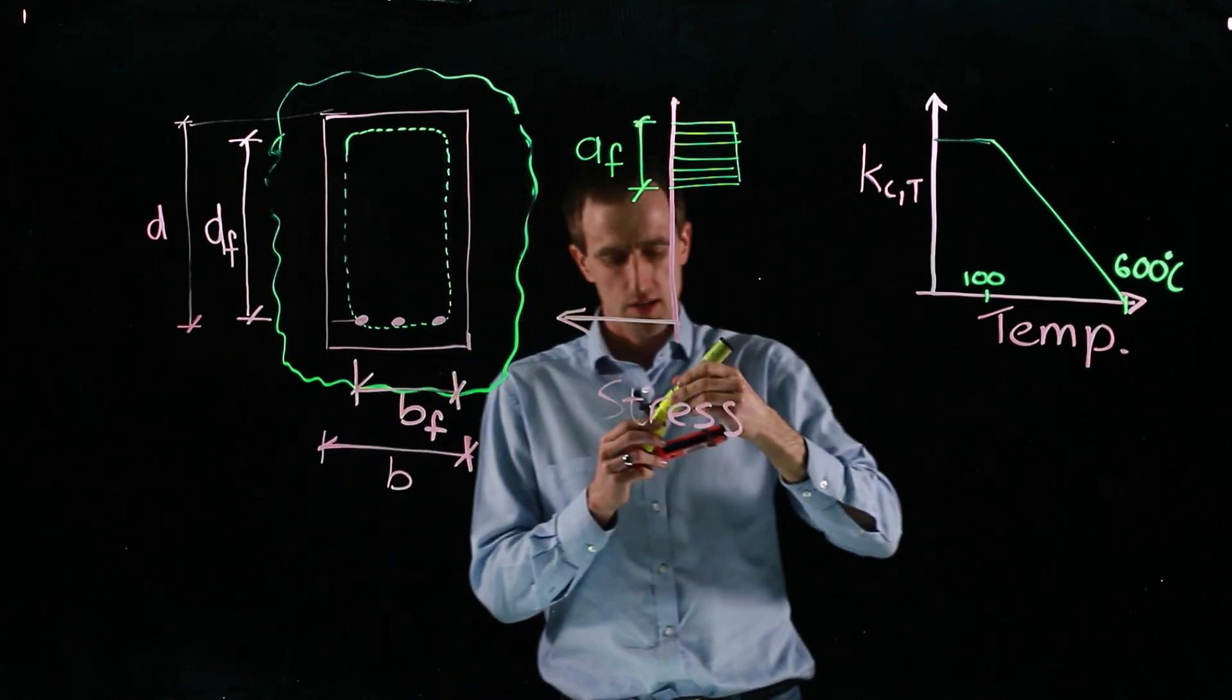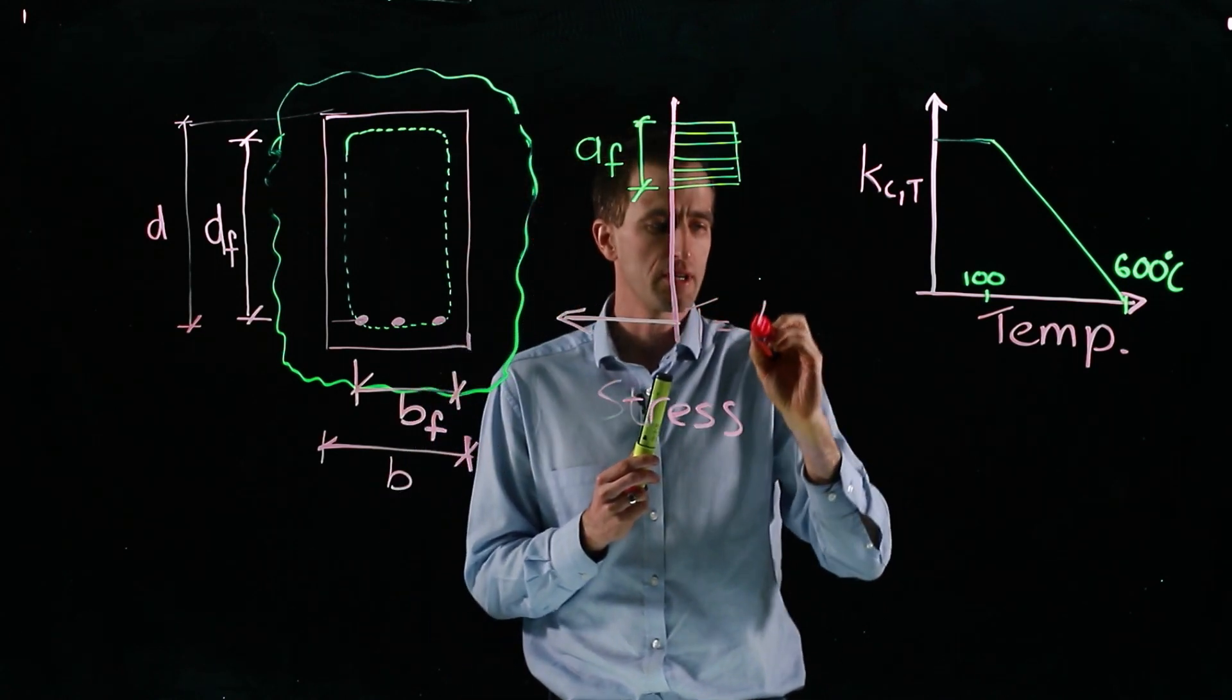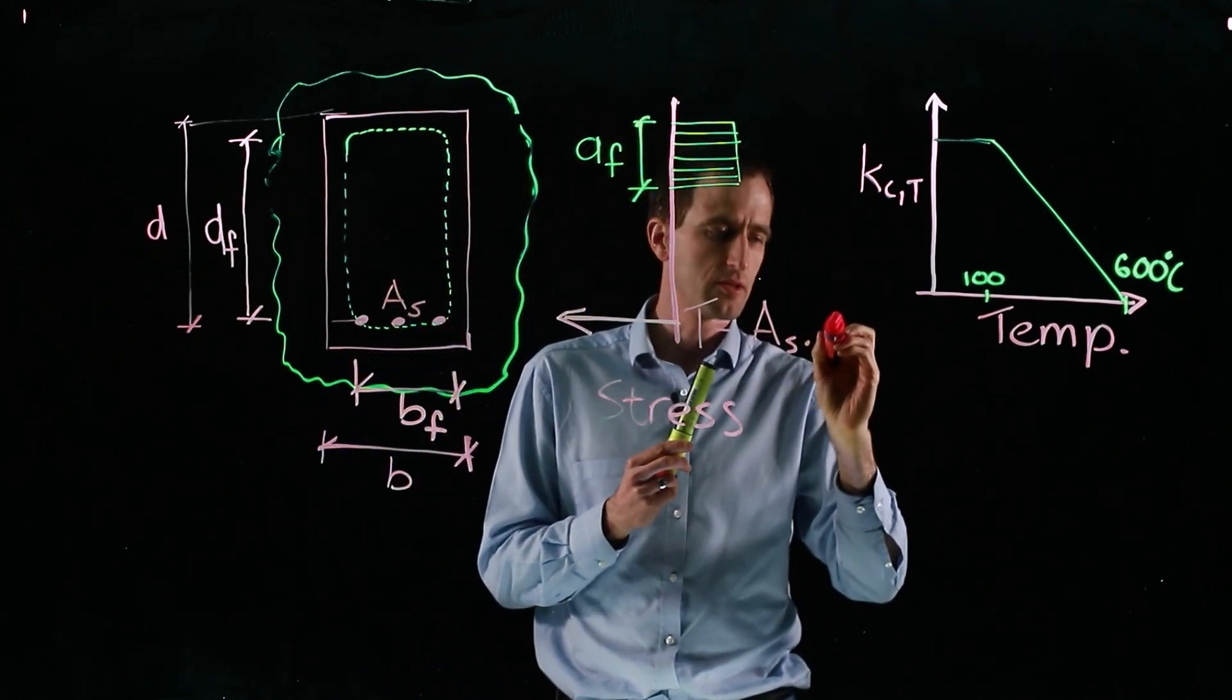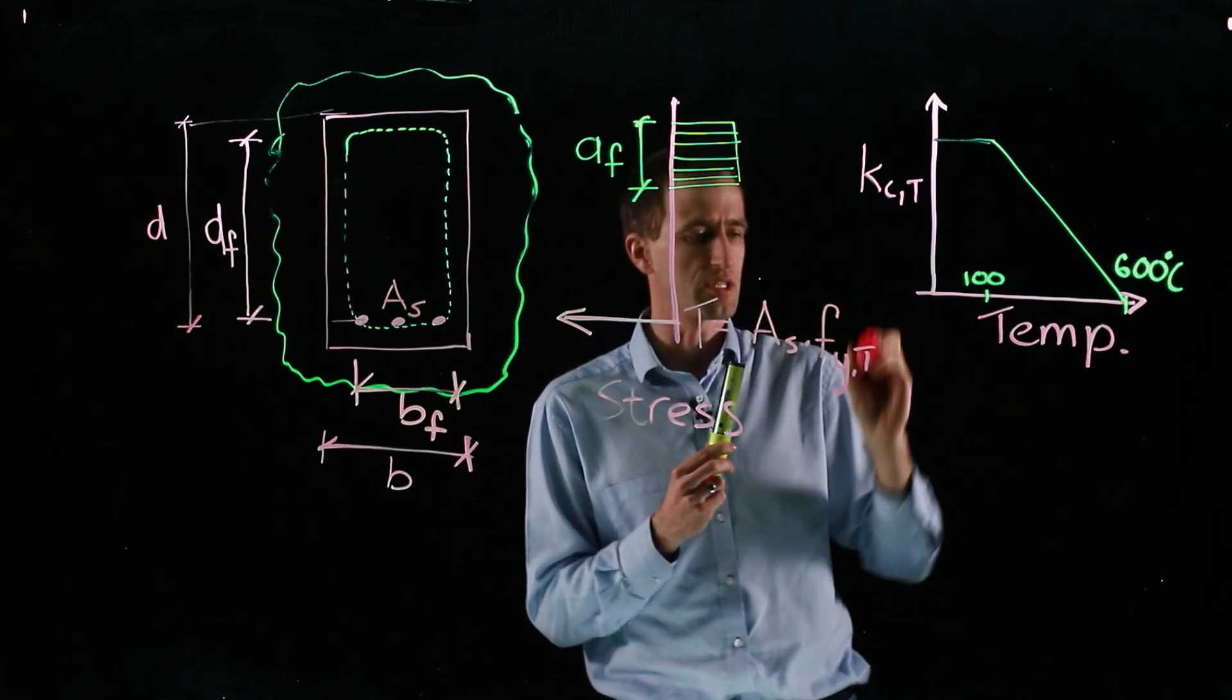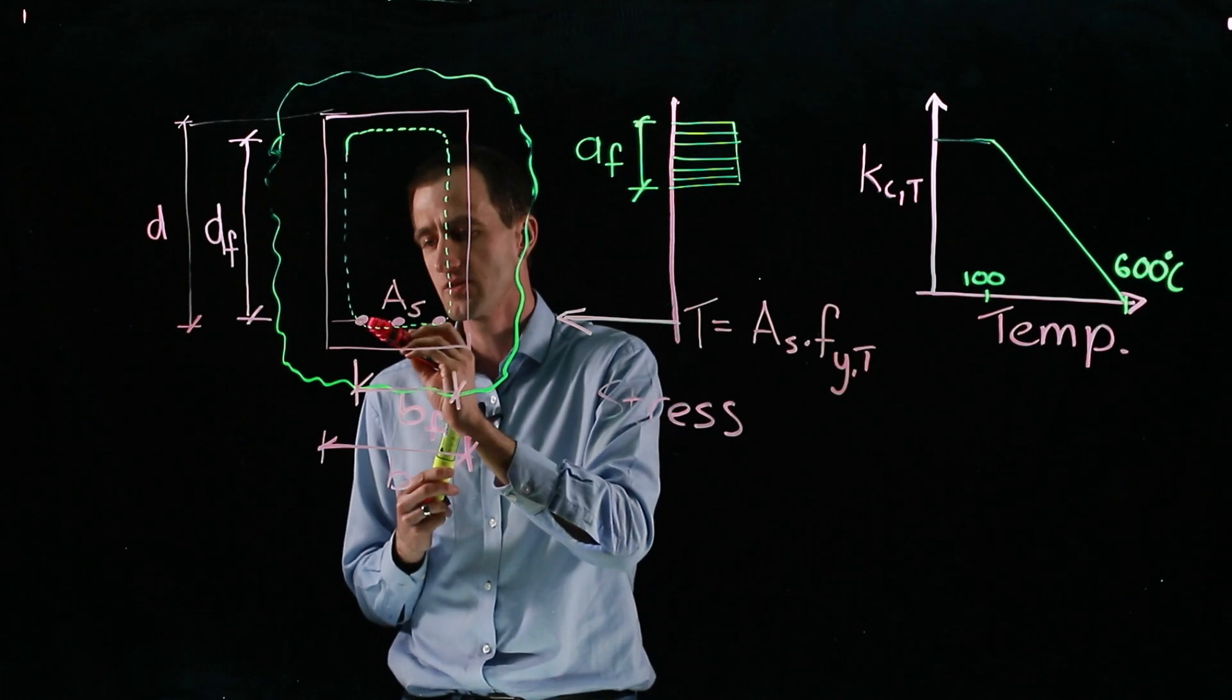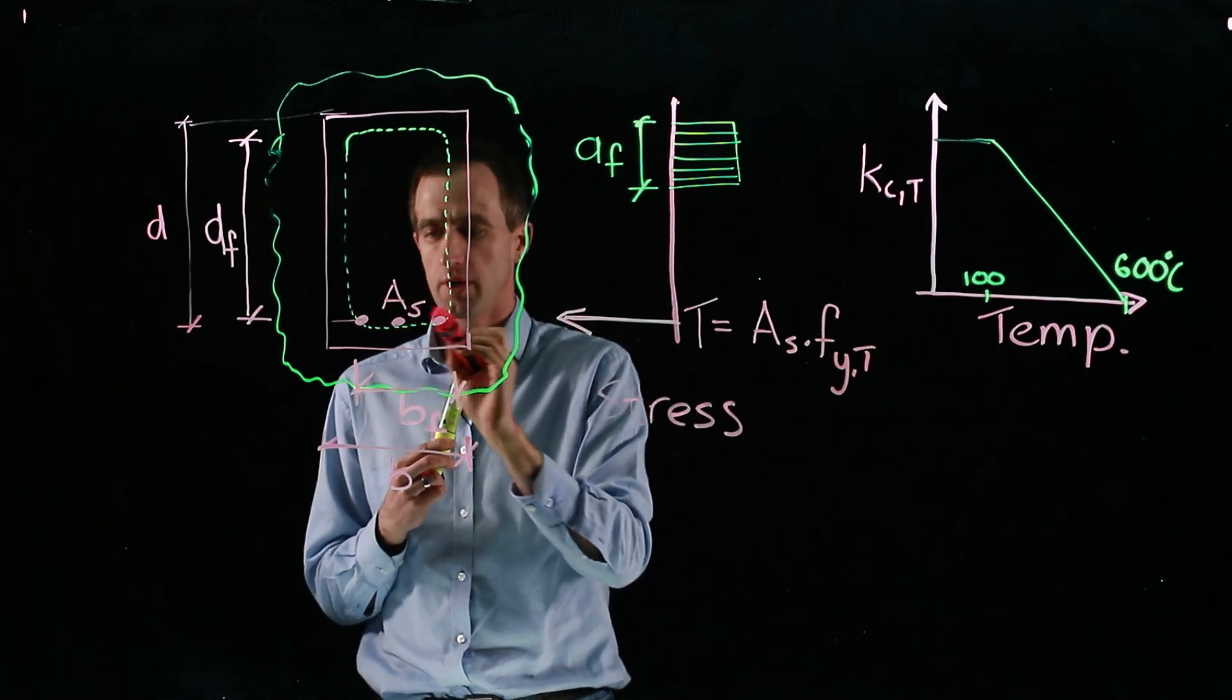If we want to work out the sum of forces, the total tension in this is our area of steel AS times a reduced yield strength at some temperature T. We need to know what is that temperature. We can work it out from the isotherm. What is the temperature roughly at the middle of that bar? It's 400 to 800 degrees Celsius for each bar.